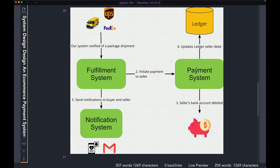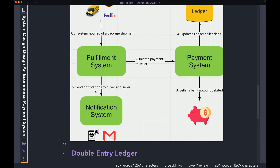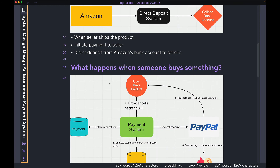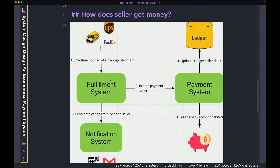That's steps three and four. And then step five is: once the fulfillment system knows that the money has been deposited to the seller's bank account, it can go ahead and send notifications to both the buyer and the seller through some notification system. The notification to the buyer can be something along the lines of your product has shipped. And the notification to the seller can be something along the lines of hey, the money has been deposited in your bank account. So that's how the whole flow works — both the buying part and also the selling part.